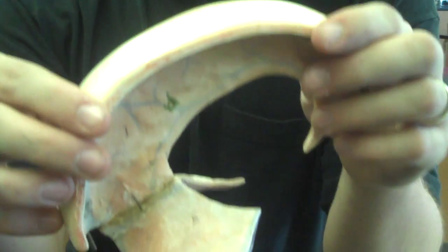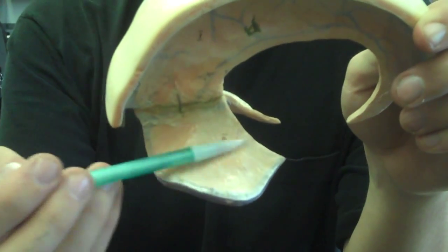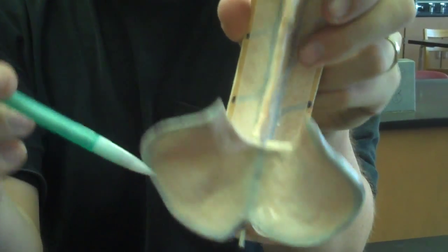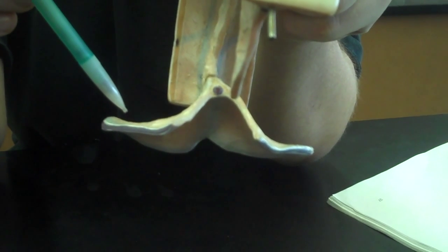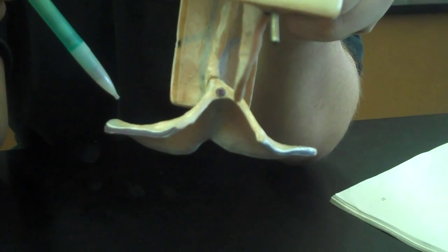Next we have the Tentorium cerebelli. You see these flat wings on both sides? Those are the two Tentorium cerebelli. They fit in between the cerebrum and the cerebellum and separate those two from each other.